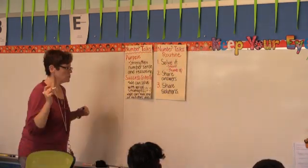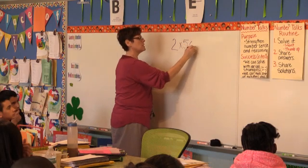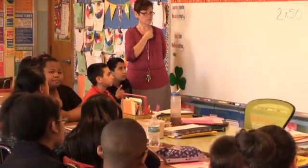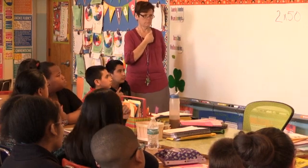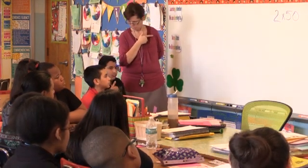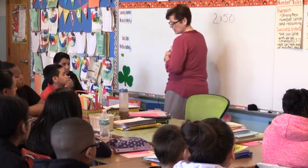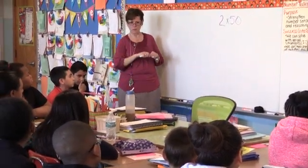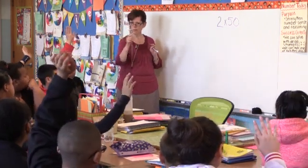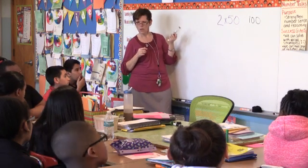So here is our first one. Remember, we always start out kind of easy. Not going to say it, but you're going to read it — it's in the position. Start solving. It looks like a lot of people have at least one strategy, and a lot of people have more than one strategy. So what was the answer? Jalen? 100. Did anybody come up with something different? So 100.